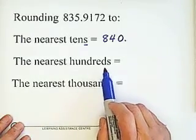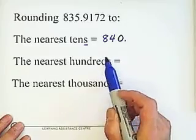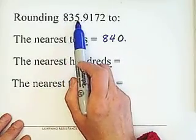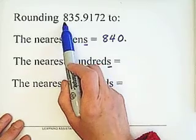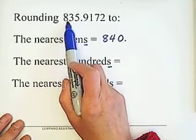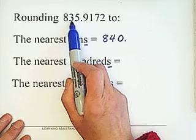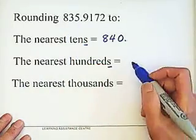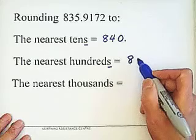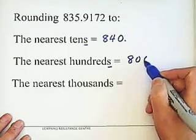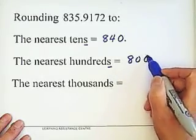Rounding to the nearest hundred: the hundreds place is 8, because counting from the right of the decimal point — ones, tens, hundreds. Check the right side of the rounding digit: it is 3. Since 3 is less than 5, drop it. So 8 is replaced by 0, giving 800.